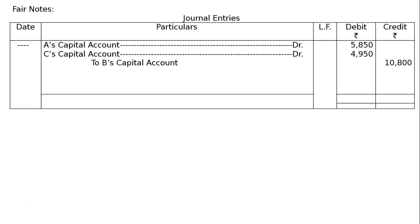Narration: Being adjusting journal entry passed for treatment of goodwill without raising goodwill account in gaining ratio on retirement of B. Rs. 10,800.